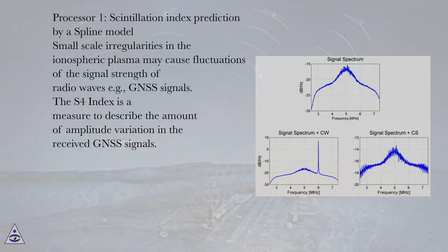Processor 1: Scintillation Index Prediction by a Spline Model. Small-scale irregularities in the ionospheric plasma may cause fluctuations of the signal strength